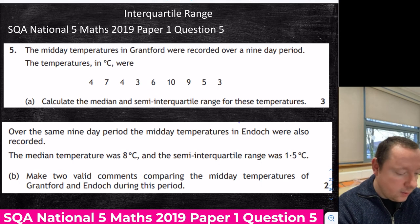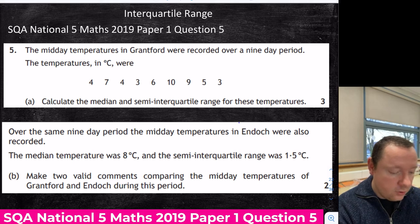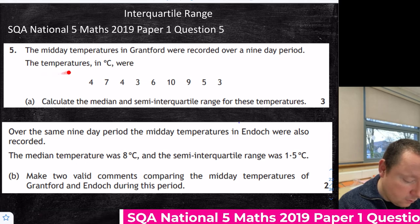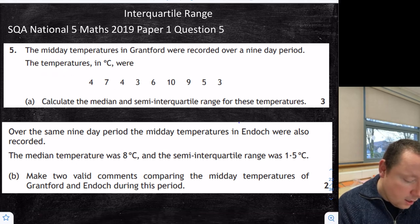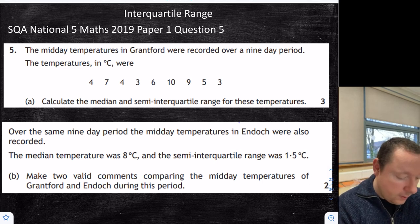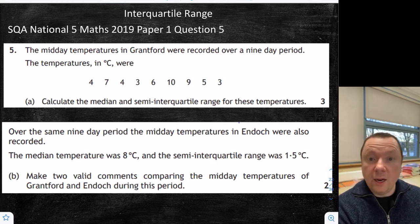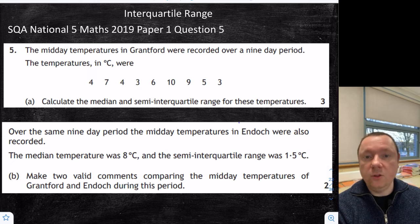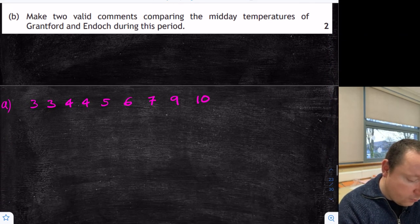Another interquartile range question — SQA National 5 Maths 2019 Paper 1 Question 5. The midday temperatures in Grantford were recorded over a 9-day period. Calculate the median and semi-interquartile range. For median and semi-interquartile range, we need the data to be in order. I've already put the data in order for us, and we need to find the middle of that.